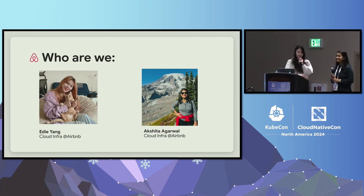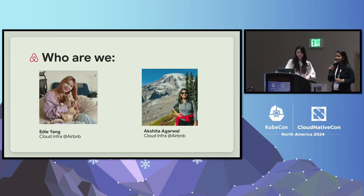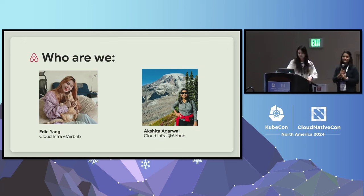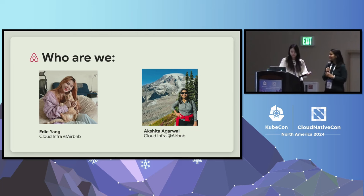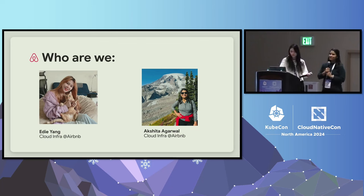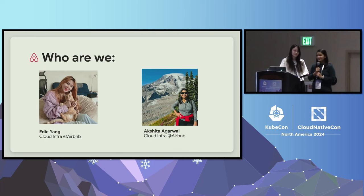And here, together with me, is my dear teammate, Akshita. Hi, everyone. My name is Akshita, and along with Edie, I'm a software engineer at the Cloud Infrastructure team at Airbnb. I'm a hiking enthusiast and enjoy almost everything outdoors, including biking and paddle boarding. You can see in the photo we have the mighty Mount Rainier in my back. Just like my hike up this mountain, the egress gateway journey was hard but very rewarding, and I'm really excited to share it with you today.